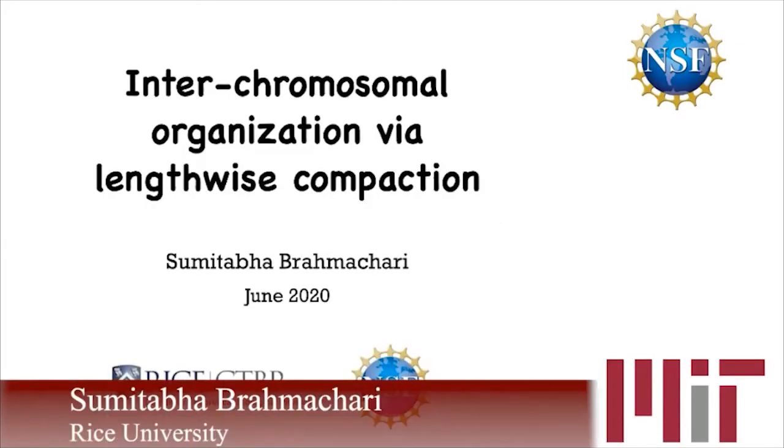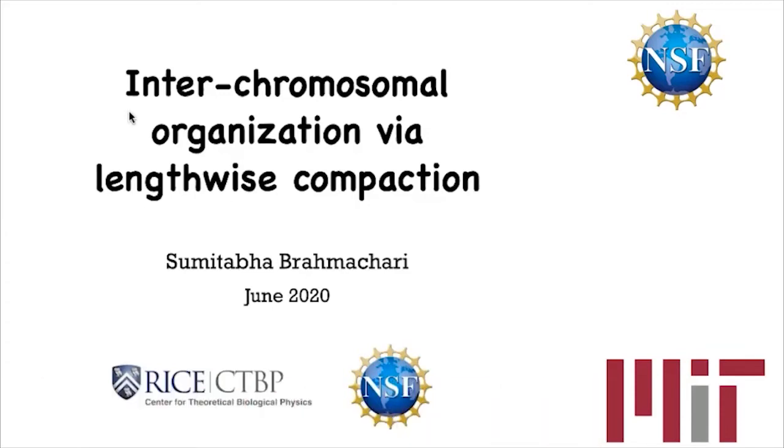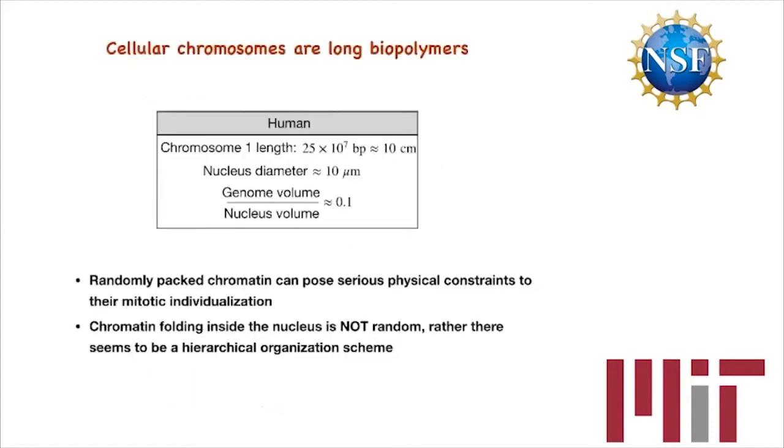A little introduction: DNA is the chemical substance containing our genetic information, but as a physical object, DNA is a very long biopolymer. Human chromosome 1 is about 10 centimeters long, packed within a nucleus of diameter 10 microns — so there has to be at least a thousand-fold compaction in the linear dimension for chromosome 1 to fit inside the nucleus. However, volume-wise, the total volume occupied by all genomic elements inside the nucleus is about 10% of the nuclear volume, so the genome could theoretically be randomly packed.